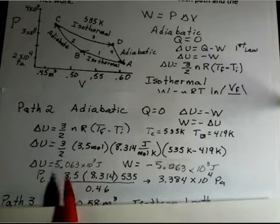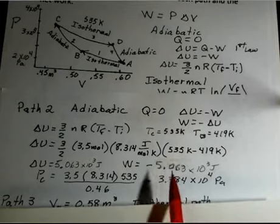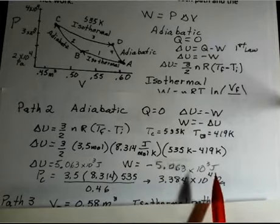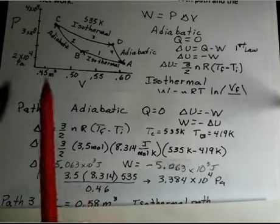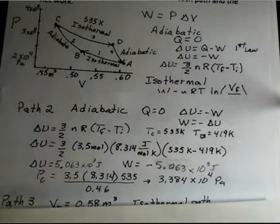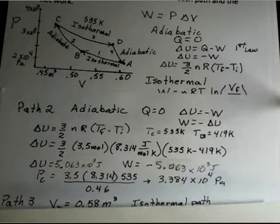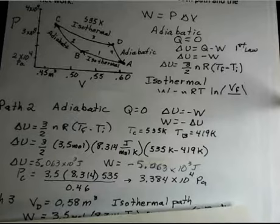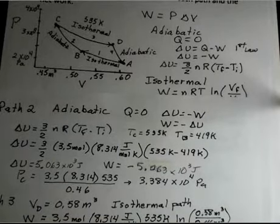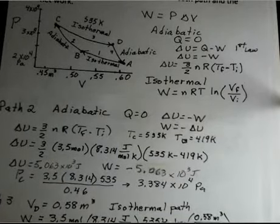That's not the work. The work is negative 5.063 times 10 to the third joules. Again, we're compressing the gas. It's going to a smaller volume, so that work has to be a negative number. And if I want to know the pressure at point C, use the ideal gas law and you come up with 3.384 times 10 to the fourth Pascals.